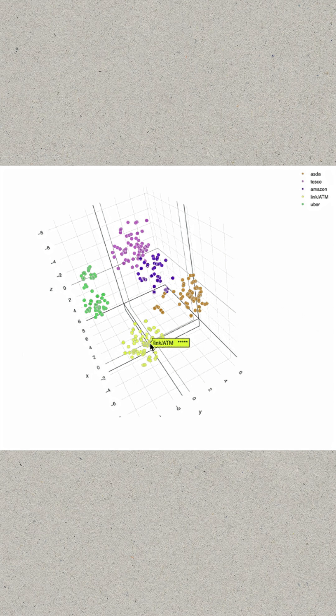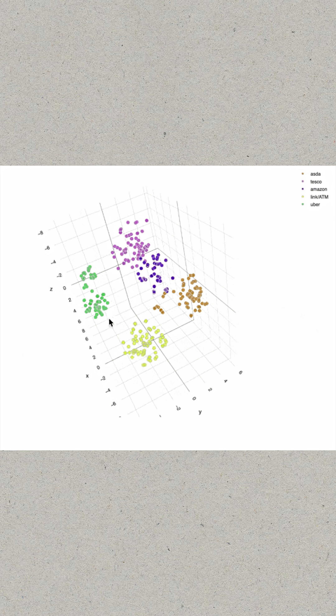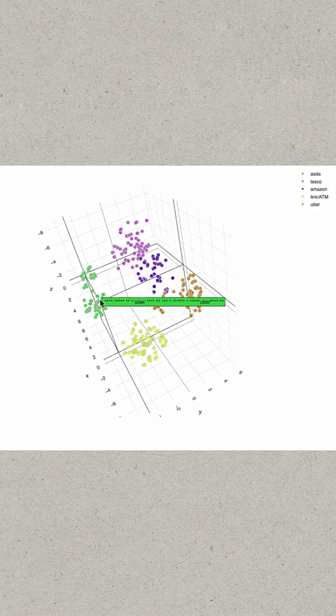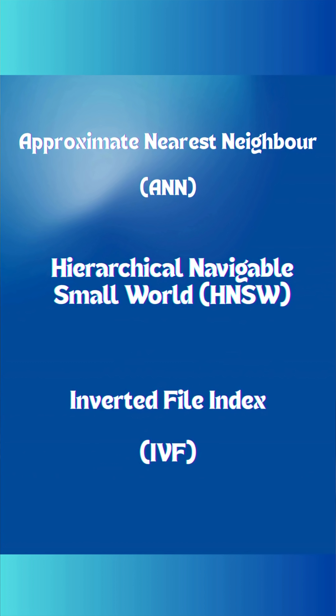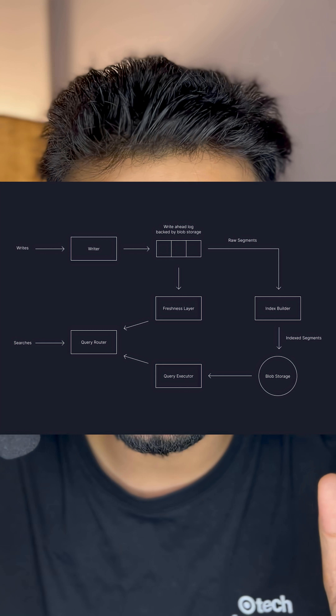For AI tasks like semantic search or RAG, look for databases optimized for approximate nearest neighbors (ANN) — specifically Hierarchical Navigable Small World (HNSW) or Inverted File Index (IVF). These ensure low-latency queries.